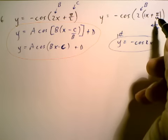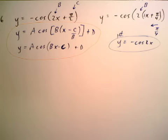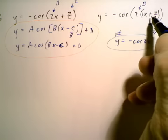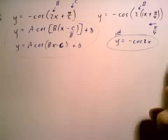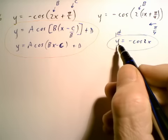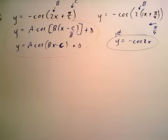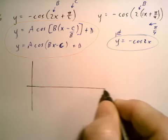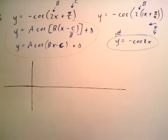And then the phase shift, meaning just where do you shift the graph, is just when it's a plus sign, we know we go to the left, and it's that number right there. So the first thing we're going to do is we're going to graph y equals negative cosine 2x. And we know how to do that.